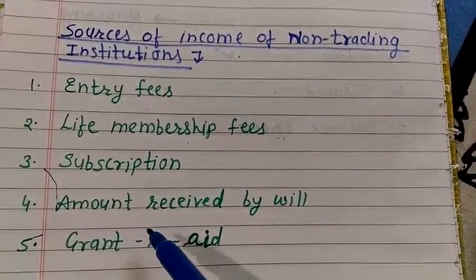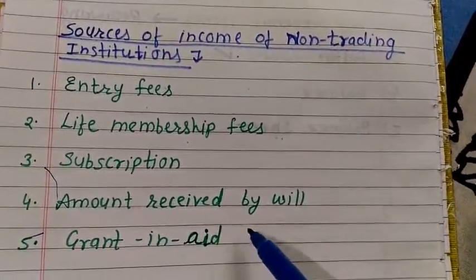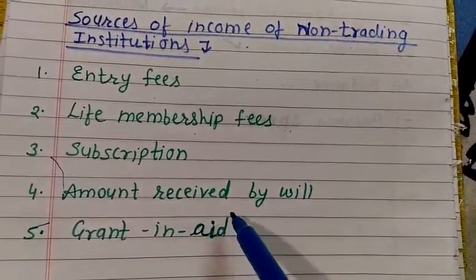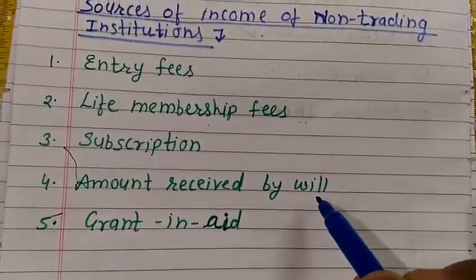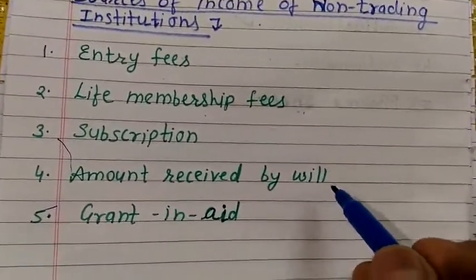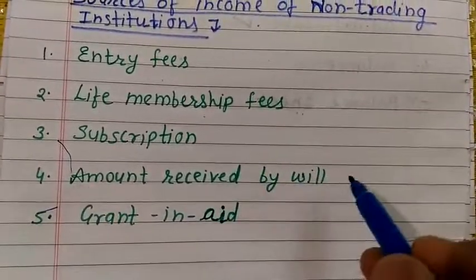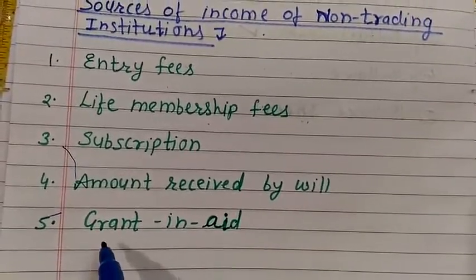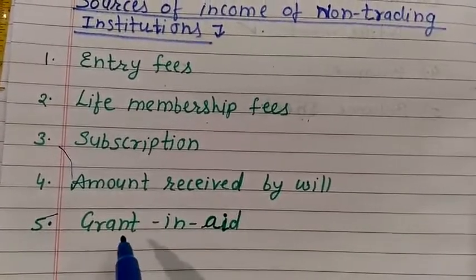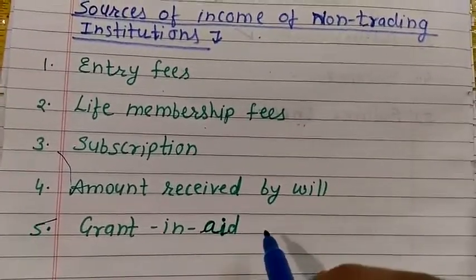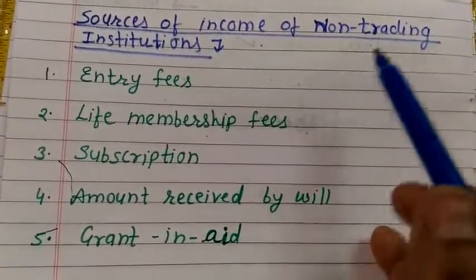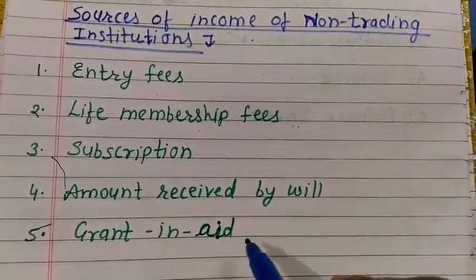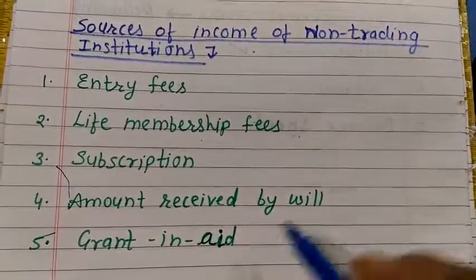Then, amount received by will: this is the amount received by an institution from any member as per his will, received after the death of the member, and generally treated as capital — a non-recurring type of income written in the balance sheet. Then grant: any type of help received from the government or an institution to run a non-trading institution, generally received for running hospitals, schools, colleges, etc. Thank you.